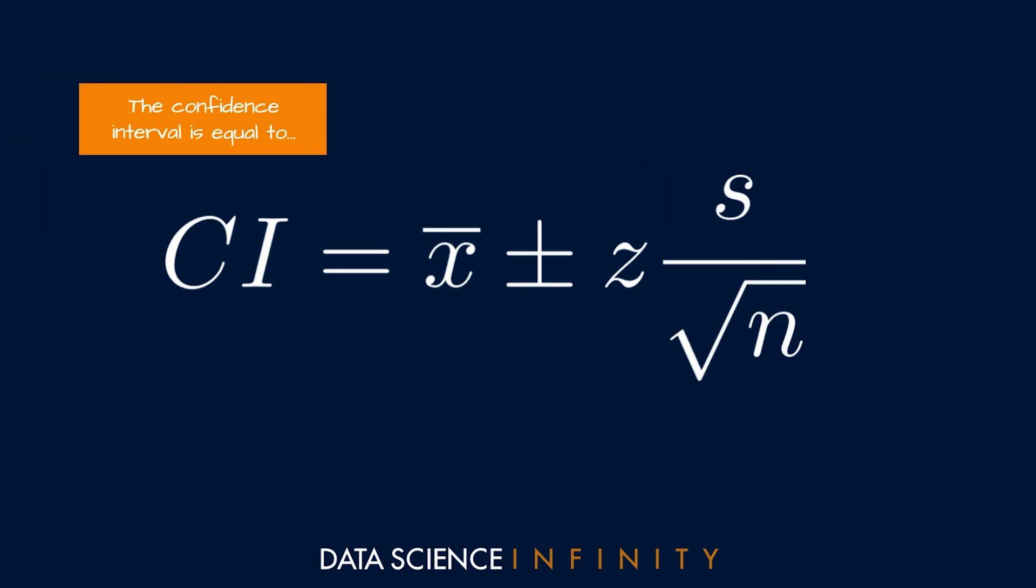We have CI, so what we're calculating here, the confidence interval, is equal to our sample mean which you can see is denoted by an x with a bar over it, that is the statistical notation for the mean of a sample, plus or minus. So in other words we will end up with a number in this calculation and we will use that above and below the mean to get the bounds for our confidence interval. You'll see exactly what I mean very soon.